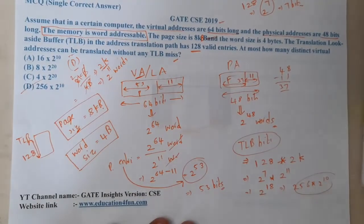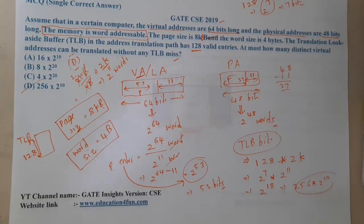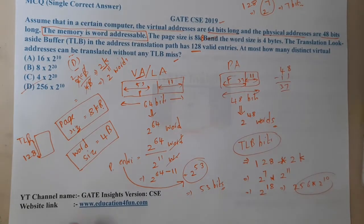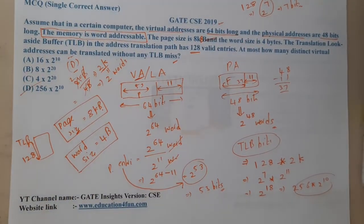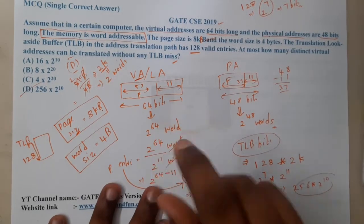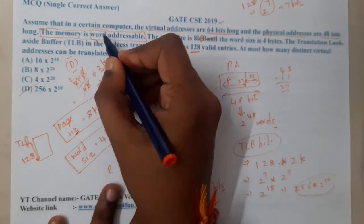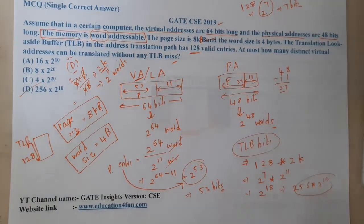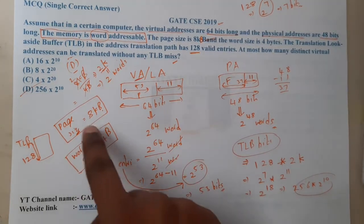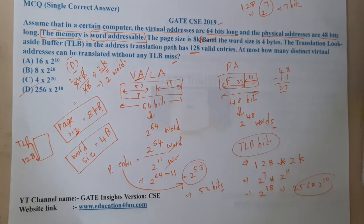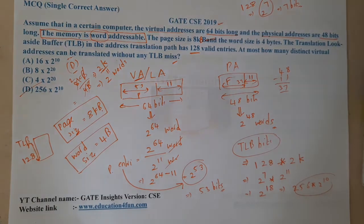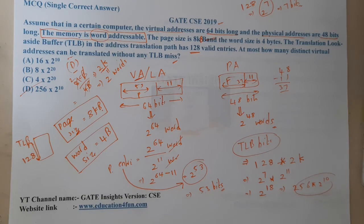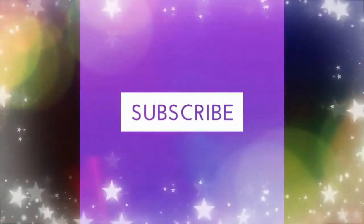This is quite an interesting question where the examiner asked about TLB size rather than page table size. The key twist is that memory is word addressable rather than byte addressable, which forces us to convert the page size into words. Missing this detail leads to silly mistakes. I hope everyone now has a clear idea. See you in the next lecture.